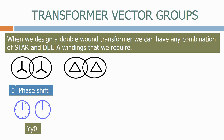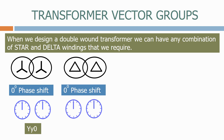Let's now look at a delta-delta transformer. A delta-delta transformer normally has a zero-degrees phase shift, and the clock faces are therefore the same as the previous transformer. We represent the delta-delta transformer as a Dd0.